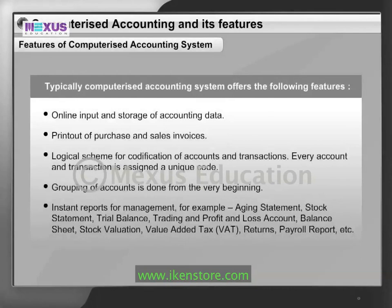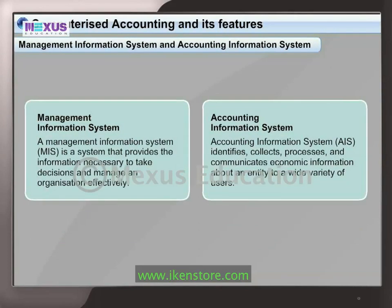Features of a computerized accounting system typically include the following. A Management Information System, or MIS, is a system that provides the information necessary to take decisions and manage an organization effectively. An Accounting Information System, or AIS, identifies, collects, processes, and communicates economic information about an entity to a wide variety of users.